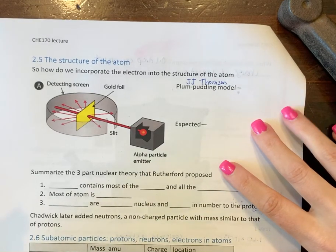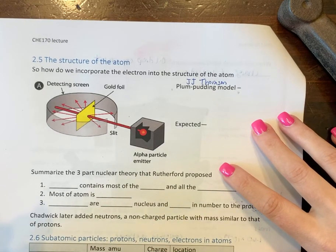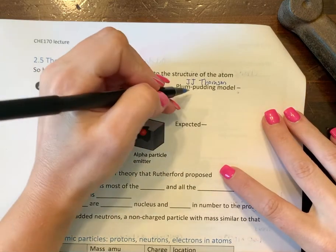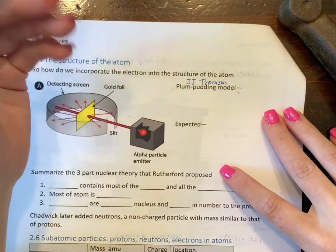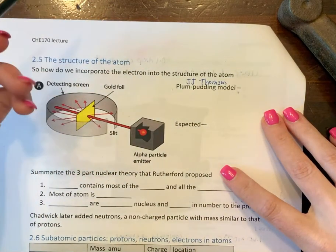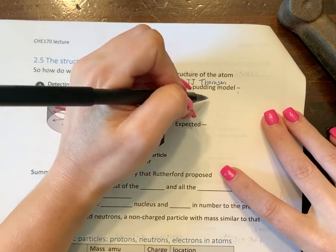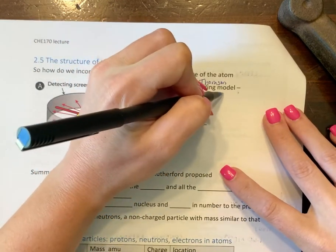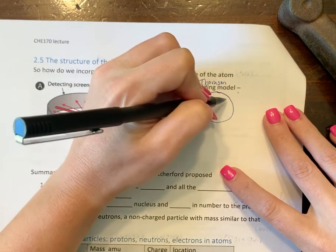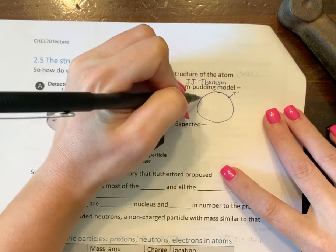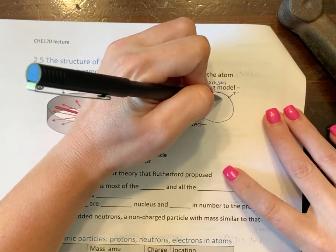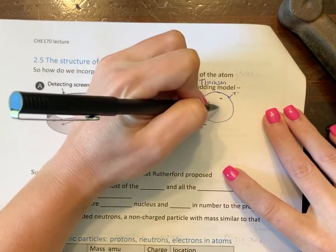So what he said is his plum pudding model. This is like a British thing. If you don't really know what plum pudding is, that's okay. He said that within an atom there's this positively charged mass, a positively charged blob, and in this positively charged blob there are negatively charged electrons within the blob.